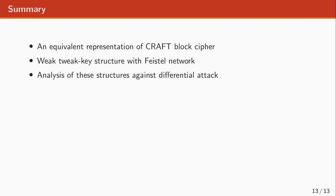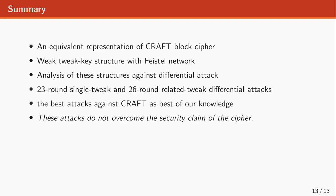To summarize this paper: first we presented an equivalent representation of the CRAFT block cipher. Then we showed how to make this representation into a weak tweak key structure that follows the Feistel network. Then we analyzed this structure against the differential attack. We presented 23-round single-tweak and 26-round related-tweak differential attacks in the weak key scenario. As far as we know, they are the best attacks against CRAFT by definition of 'best' as having the highest number of rounds. We emphasize that these attacks do not overcome the security claim of the cipher. Thank you for watching this video.